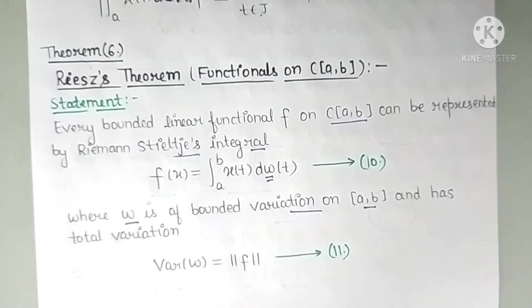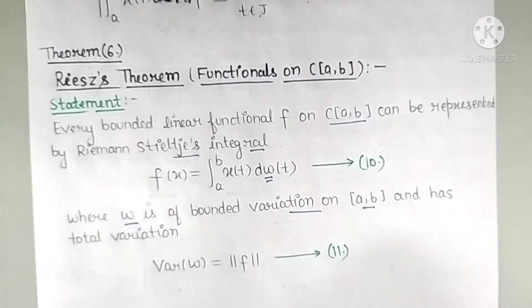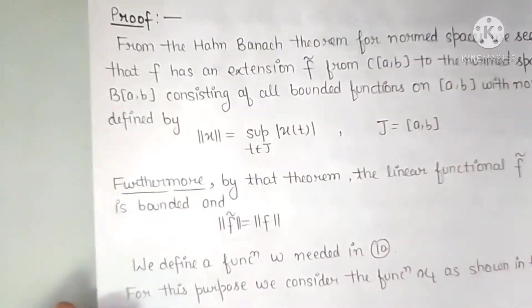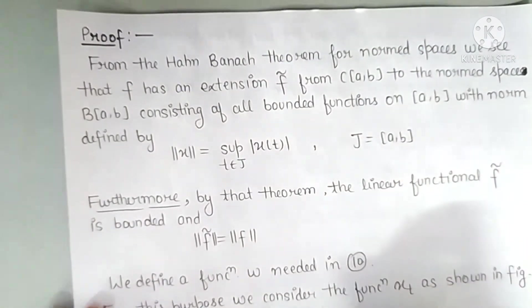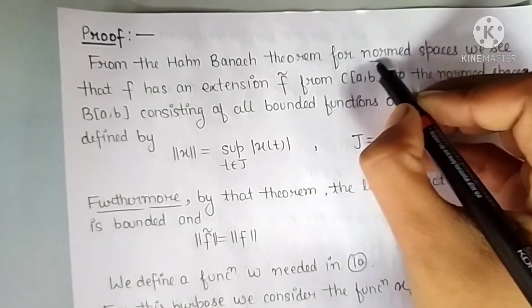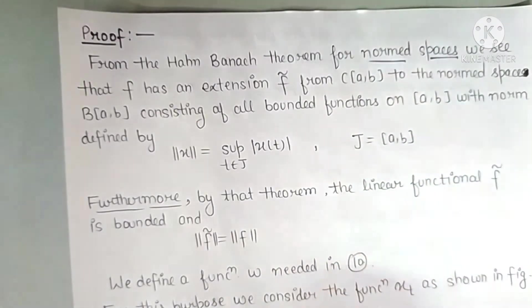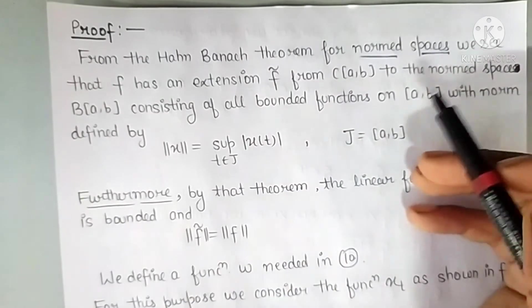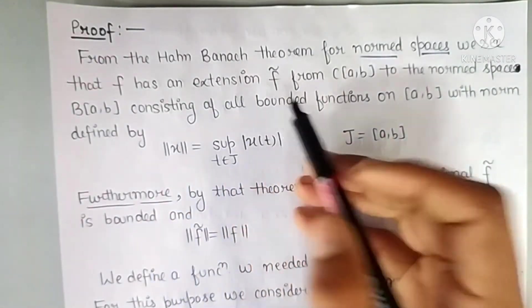We are given only one thing: F is a bounded linear functional defined on C[a,b]. We need to prove both the representation and the norm equality. Let us start with the proof.